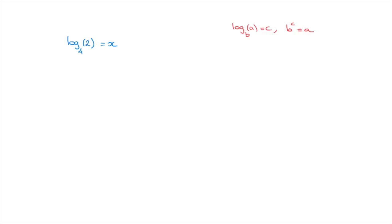So using this, let's go ahead and rewrite our equation in exponential form. That would be 4 raised to the power of x equals to 2. Now that we've done that, we need to make sure that both sides of the equation are written as powers of the same number. Looking at this, we have 4 on the left-hand side and 2 on the right-hand side.